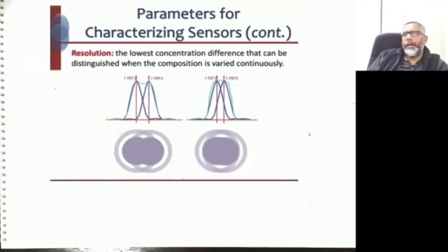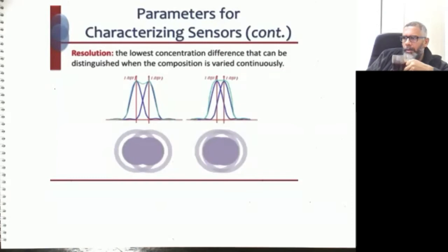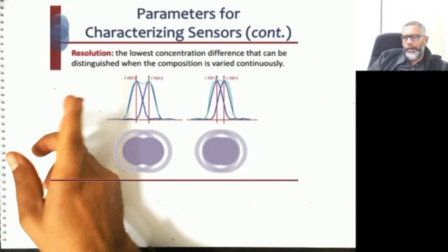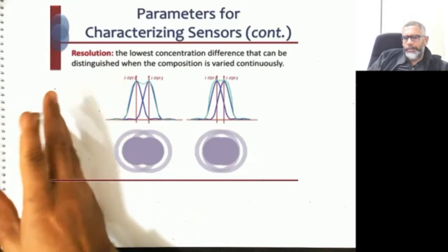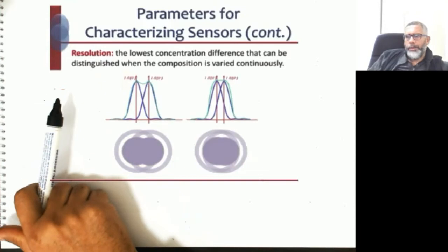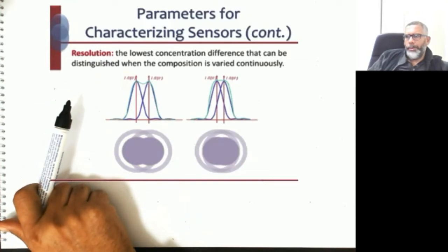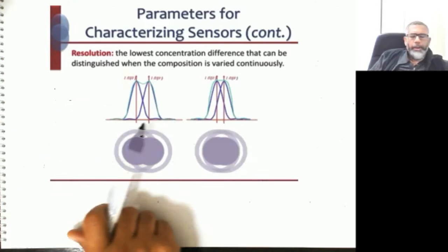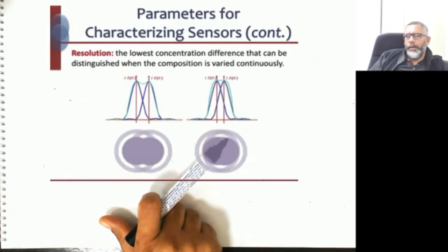Another characteristic property of sensors is resolution. Resolution and sensitivity are similar concepts, just as precision and accuracy appear similar, but they have distinct differences. Resolution is defined as the lowest concentration difference that can be distinguished when the composition is varied continuously. This can be explained using an optical sensor example.